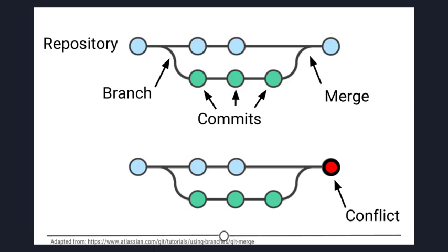If you have just been brought onto a project that has been tracked with version control, you would clone the repository to get access to and create a local version of all of the repository's files and all of the tracked changes. What is a fork? A fork is a personal copy of a repository that you have taken from another person. If somebody is working on a cool project and you want to play around with it, you can fork their repository and then when you make changes, the edits are logged on your repository, not theirs.